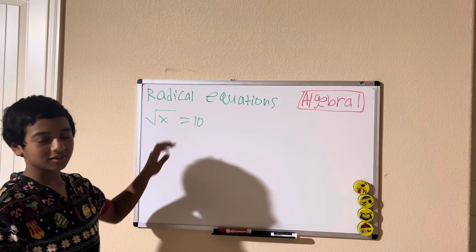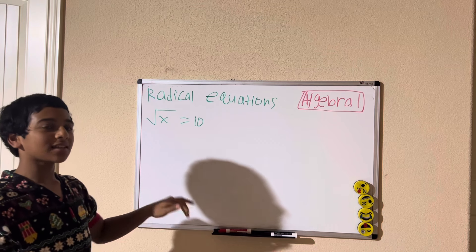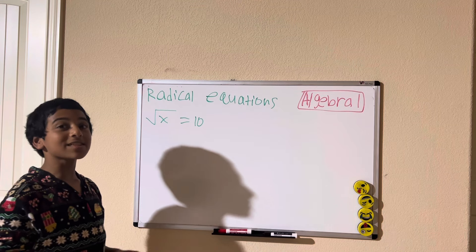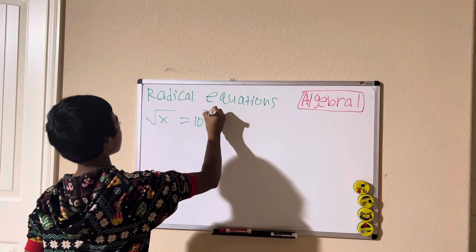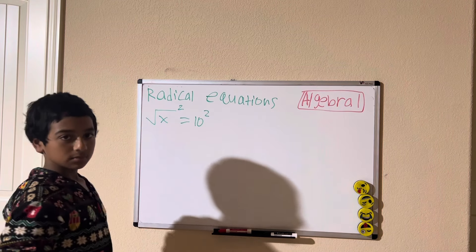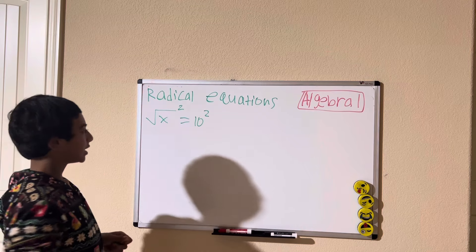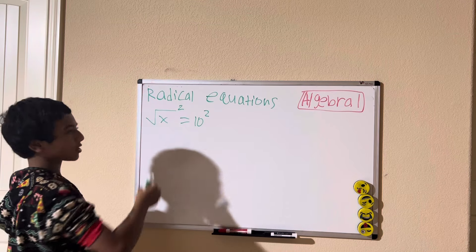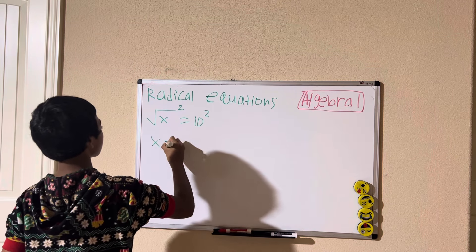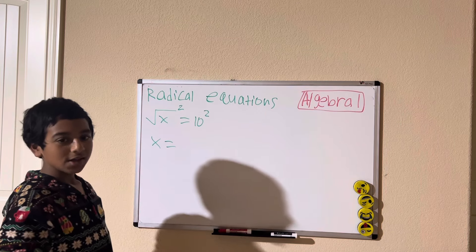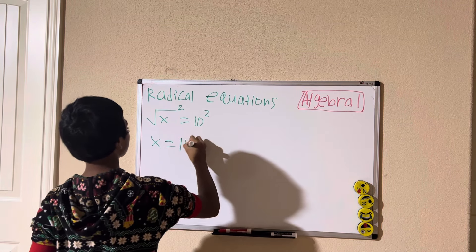So to solve a radical equation — we have the square root of x equals 10 — the opposite of taking the square root of a number is squaring that number. So we're going to square both sides. Squaring the square root of x will cancel out the square root, giving us x equals 10 squared, which is 10 times 10, so x equals 100.